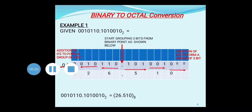In this section, we have solved 2 examples of binary to octal conversion — one having only an integer part, and one having both an integer part and a fractional part. The steps to remember are: form groups of 3 bits, and represent each 3-bit group with its equivalent octal number.